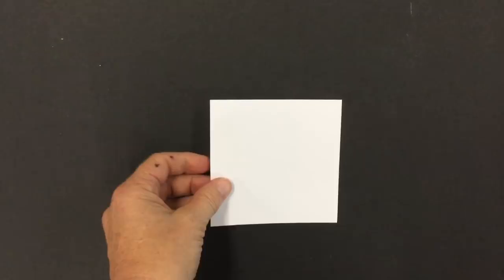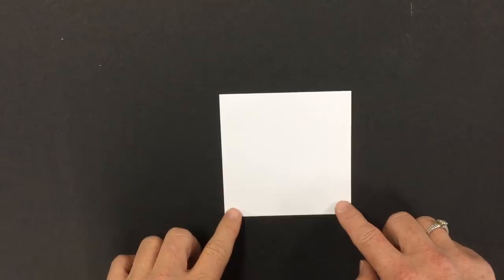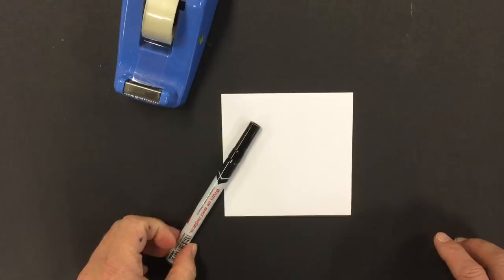So to start off with, I have a 10 cm by 10 cm square, and you also are going to need some tape. I'm going to use a marker, but I recommend a pencil for my students in case they make a mistake and need to erase, and a pair of scissors.